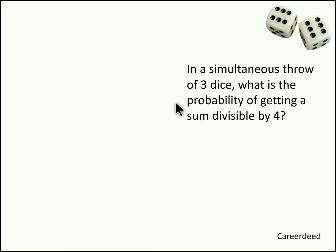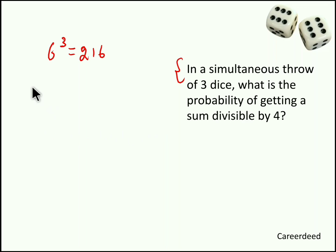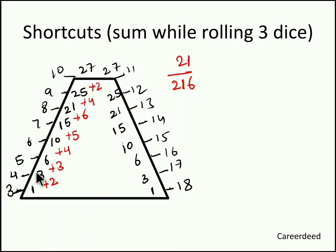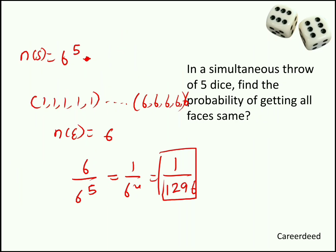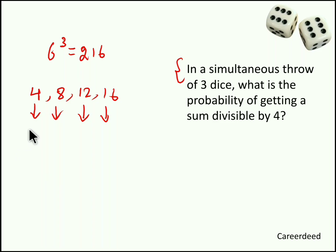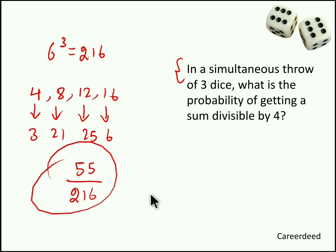In a simultaneous throw of 3 dice, what is the probability of getting a sum divisible by 4? Total sample space = 6³ = 216. Sums divisible by 4 are: 4, 8, 12, and 16. From the 3-dice frequency table: sum 4 occurs 3 times, sum 8 occurs 21 times, sum 12 occurs 25 times, and sum 16 occurs 6 times. Total events = 3+21+25+6 = 55. So the probability is 55/216.